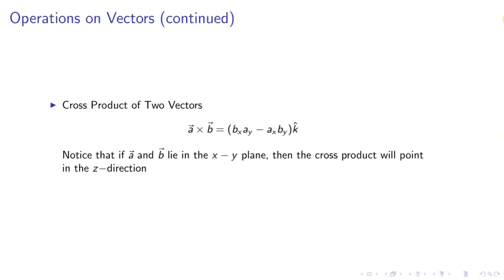Cross product of two vectors. For two vectors A and B, the cross product is Bx Ay minus Ax By k-hat, where k-hat is the unit vector in the z direction. Notice that if A and B lie in the x-y plane, then the cross product will point in the z direction.